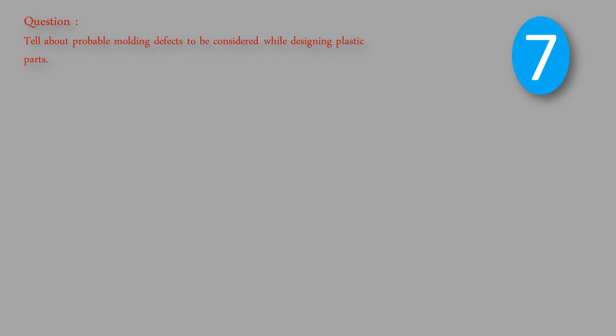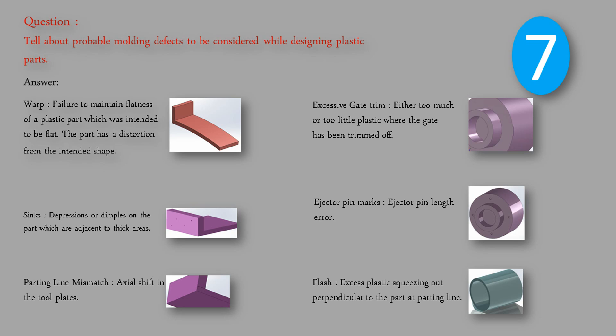Question: Tell about probable molding defects to be considered while designing plastic parts. Answer: Warp - failure to maintain flatness of a plastic part which was intended to be flat. The part has a distortion from the intended shape.